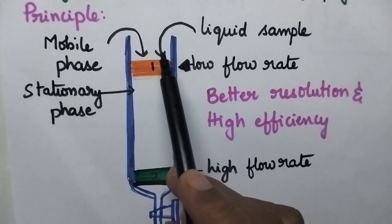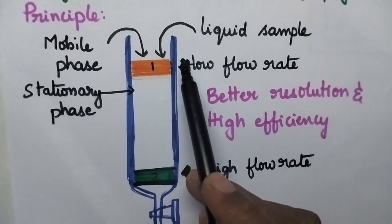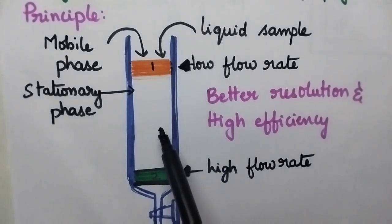When it enters the column, depending upon the difference in the affinities of the components, the separation takes place.